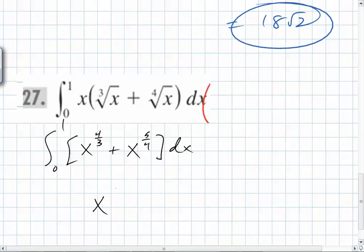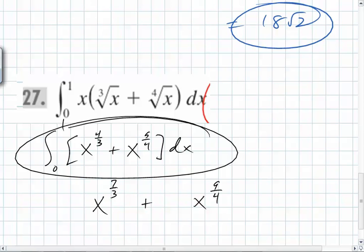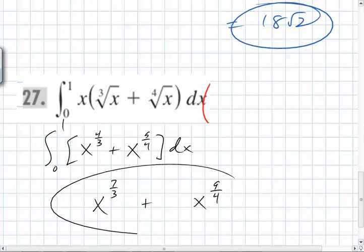So it's x to the 7 thirds and x to the 9 fourths. But what are the coefficients of each of the terms with x in them? If you took the derivative here, you would not be left with 1s as coefficients. You have to neutralize the powers that you are dropping down. You drop down to 7 thirds. So what do you have to park out front? 3 sevenths and 4 ninths.